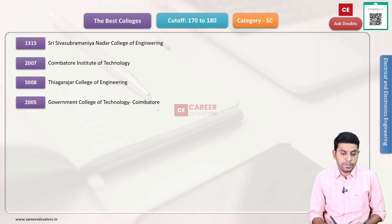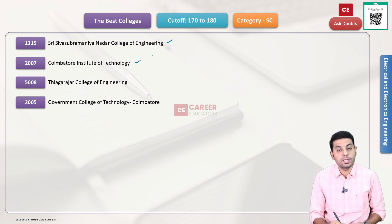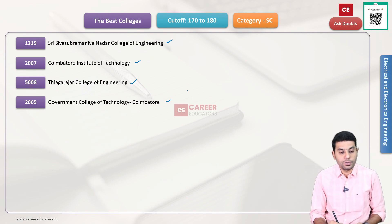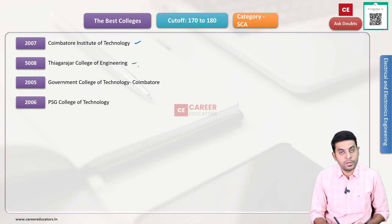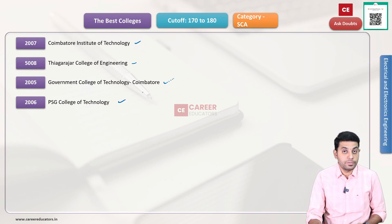Next category — we have SC category. College codes: 1315 Shree Sivasasubramanian Nadar College of Engineering, 2007 Coimbatore Institute of Technology, 5008 Thiyagarajar College of Engineering, 2005 Government College of Technology Coimbatore. Next, SCA category: 2007 Coimbatore Institute of Technology, 5008 Thiyagarajar College of Engineering, 2005 Government College of Technology, 2006 PSG College of Technology.